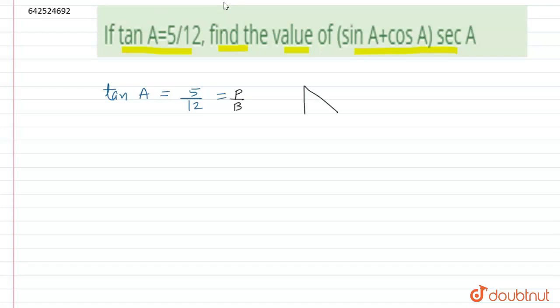So here we have a value of perpendicular and base, and this is marked as angle A. So this will be perpendicular and this will be base. Perpendicular value can be taken from the ratio as 5x and base value will be equal to 12x.